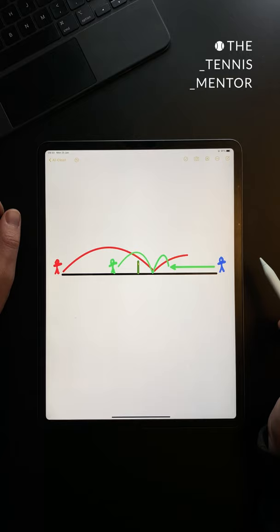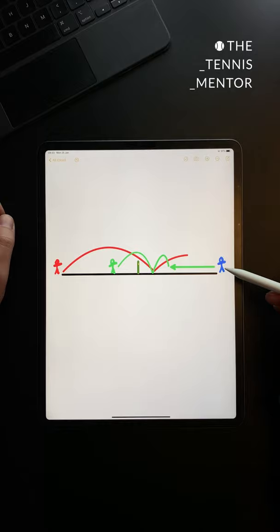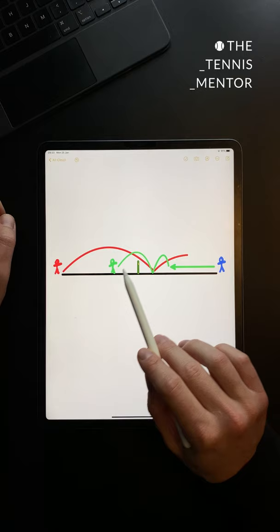So when considering a drop shot, not only do you need to consider your opponent's position, but more importantly, think about where you are on the court. The closer you are to the net, the more effective your drop shot can be.